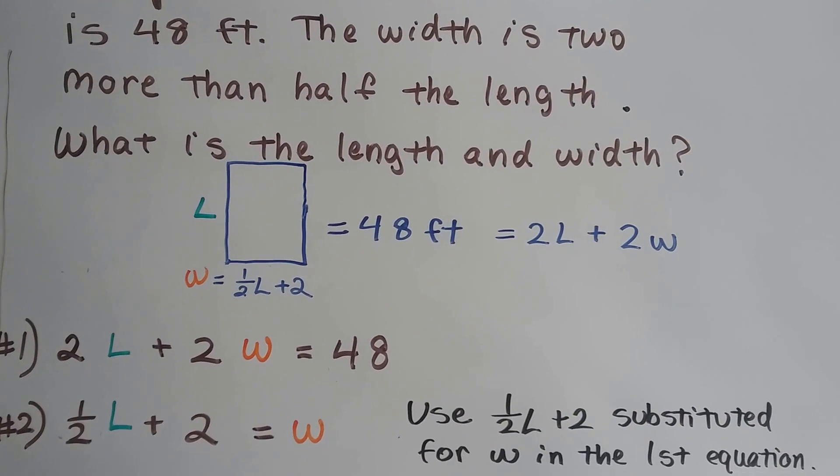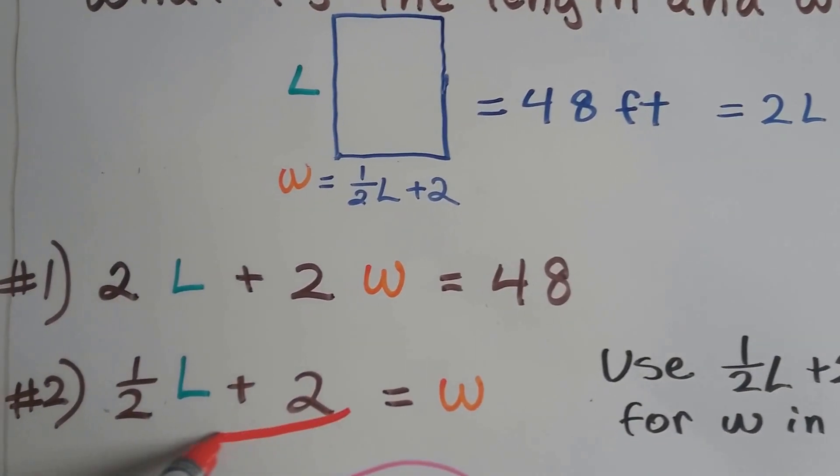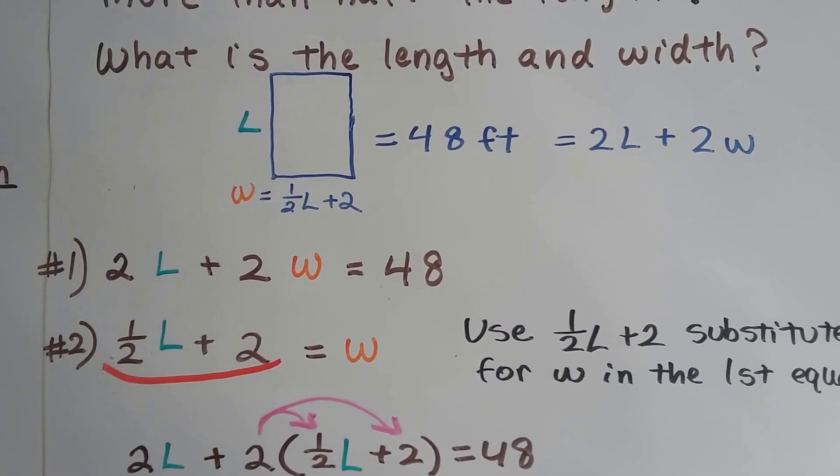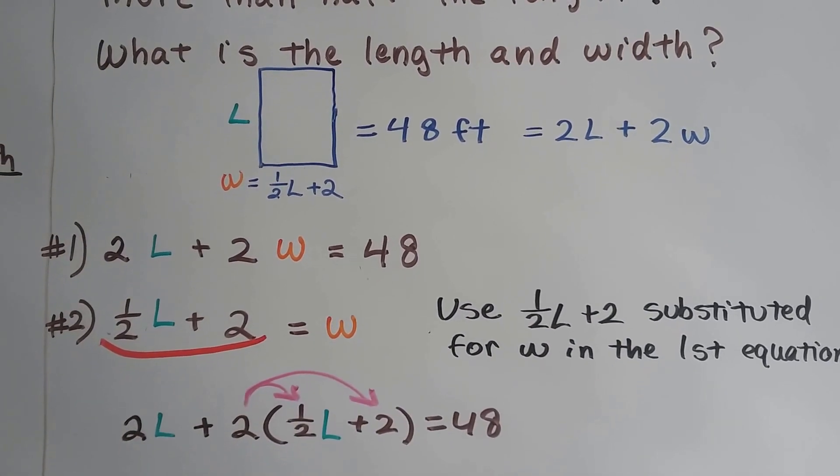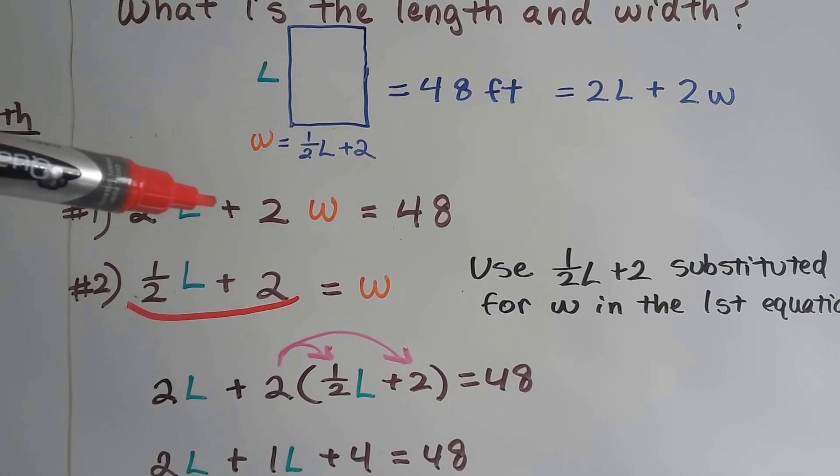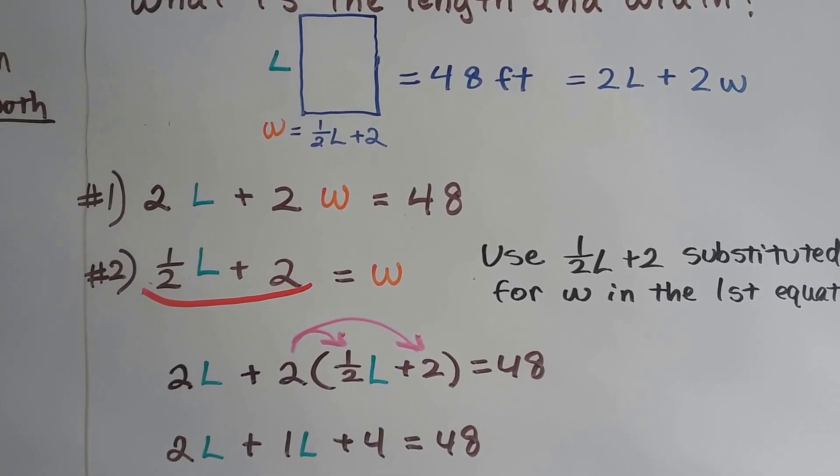So now we have two equations. Now we can use this half L plus two in the first equation to represent the W, the width. We'll just substitute it in. So we end up with 2L plus two times half L plus two is going to equal 48.